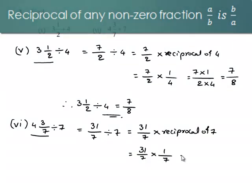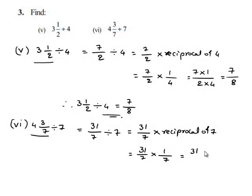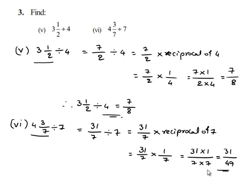This is equal to 31 multiplied by 1 upon 7 multiplied by 7, which is equal to 31 upon 49. Therefore 4 and 3/7 divided by 7 is equal to 31 upon 49.